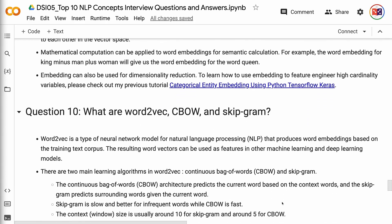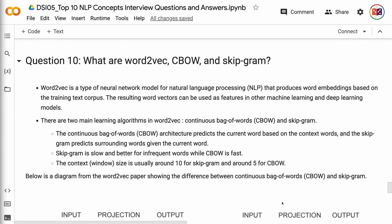Question 10: What are Word2Vec, CBoW, and Skipgram? Word2Vec is a type of neural network model for natural language processing that produces word embeddings based on the training text corpus. The resulting word vectors can be used as features in other machine learning and deep learning models. There are two main learning algorithms in Word2Vec: continuous bag of words and Skipgram. The continuous bag of words architecture predicts the current word based on the context words, and the Skipgram predicts surrounding words given the current word.